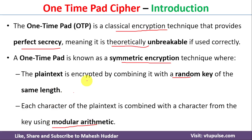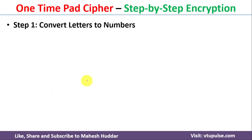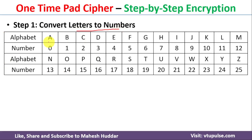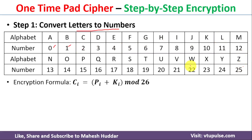To encrypt the message, the first step is to convert letters to numbers. Here we can see that for the letter A the number is 0, for B the number is 1, for C the number is 2, and so on, up to Z which is 25.